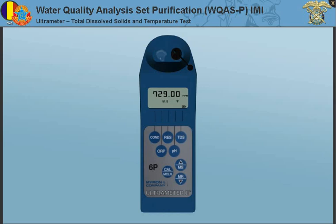This will provide you with the TDS reading of the water sample, and also a reading of the temperature of the water sample. There will be a display of dashes if there is an indication of an overrange condition from the meter setting.